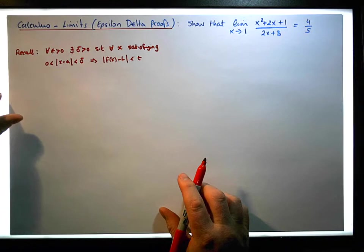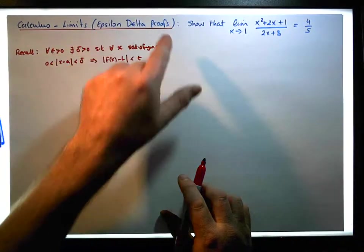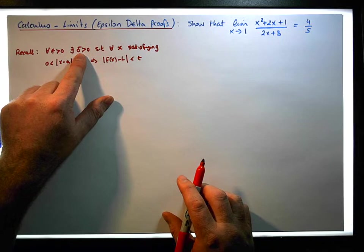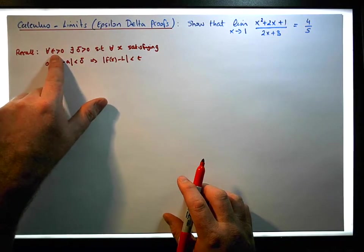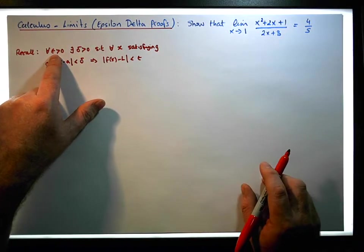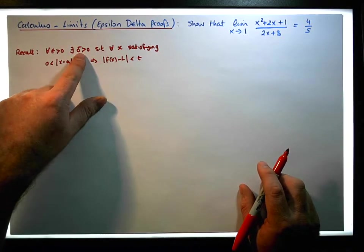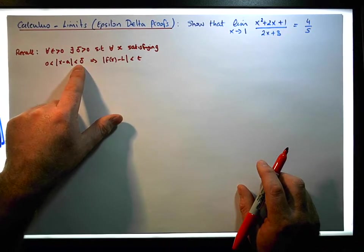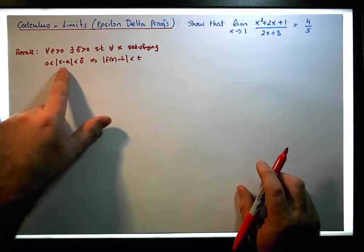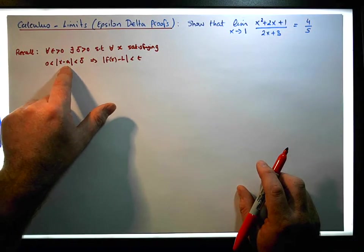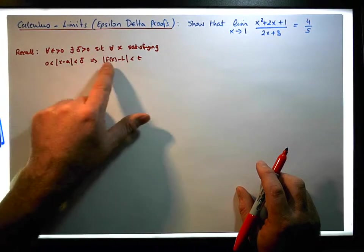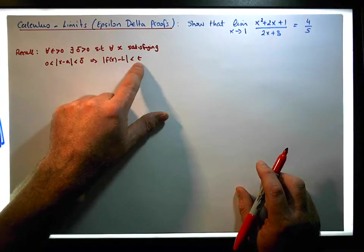That condition implies that the absolute value of f of x minus L is less than epsilon. The epsilon-delta proof requires that we find some appropriate delta to go along with the given epsilon. And once we find that appropriate delta, if we assume x is in that particular region, we have to show that the absolute value of f of x minus L is less than epsilon.